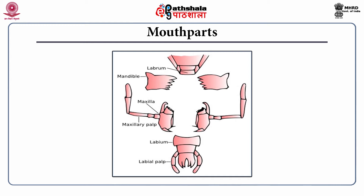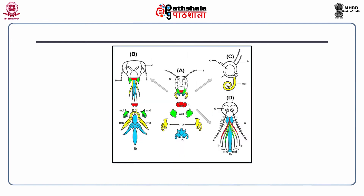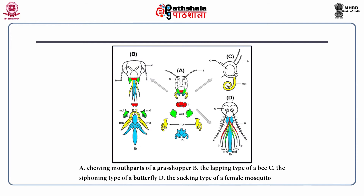The basic insect mouthpart components include a labrum, a pair of mandibles, a pair of maxillae including maxillary palps, labium and labial palps. There are four major mouthpart modifications seen across insect orders: the chewing mouthparts of a grasshopper (A), the lapping type of a bee (B), the siphoning type of a butterfly (C), and the sucking type of a female mosquito (D).